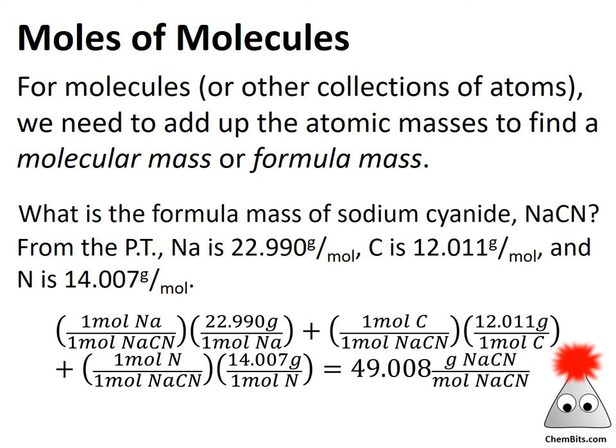What if we've got something a little more complex than a single zinc atom — like a molecule, an ionic compound, or a formula? Fortunately, it's very similar. The main difference is that instead of using a number directly off the periodic table, we need to calculate a formula mass or molecular mass, sometimes called a formula weight or molecular weight.